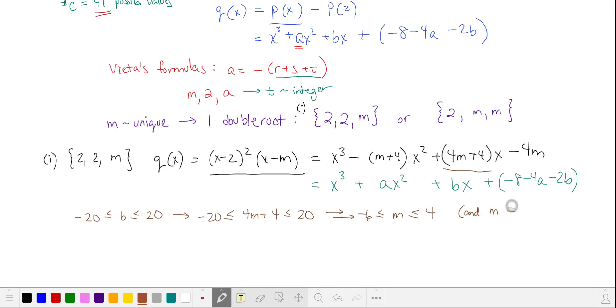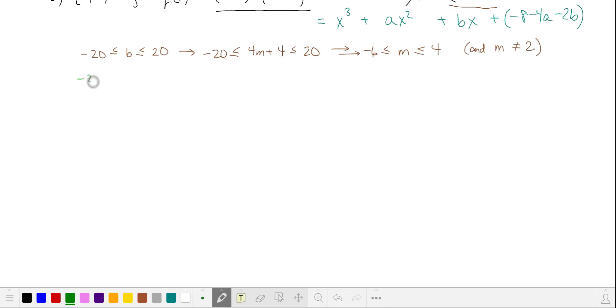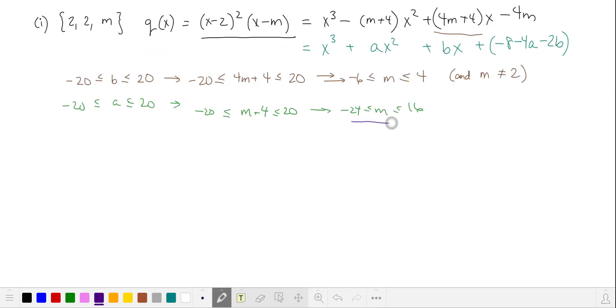And recall that m is not allowed to be 2. We can also check A, which is also between negative 20 and 20, and substituting and solving for m, we get a wider interval for m than we did for our restriction on b. So the number of valid values of m excluding 2 is 10, which means we also have 10 valid values for a and b.